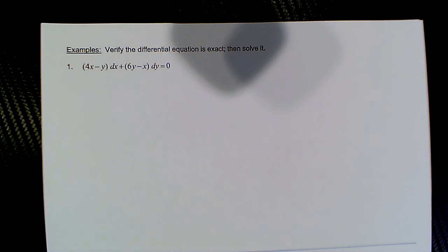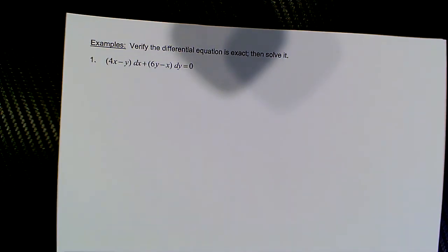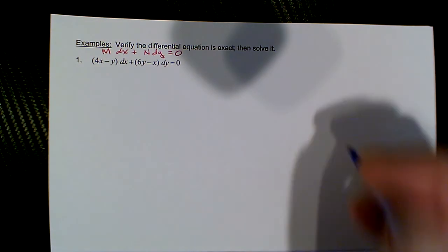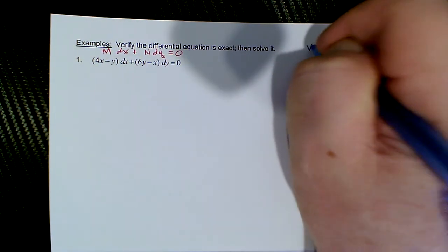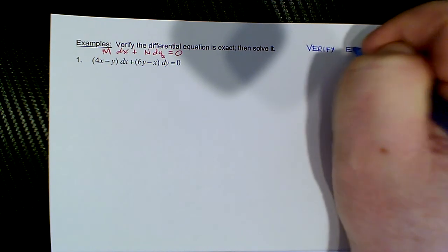And then we always say to form the general implicit solution. Although we have a cookbook recipe here, the method actually flows rather neatly with just those two major conditions. The first thing is the verification — this is taking the form of Mdx + Ndy = 0, which is our standard form for the exact equation.